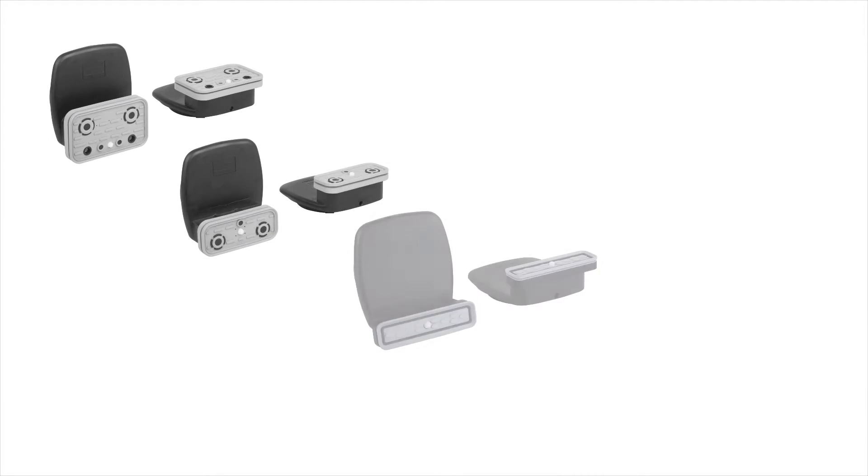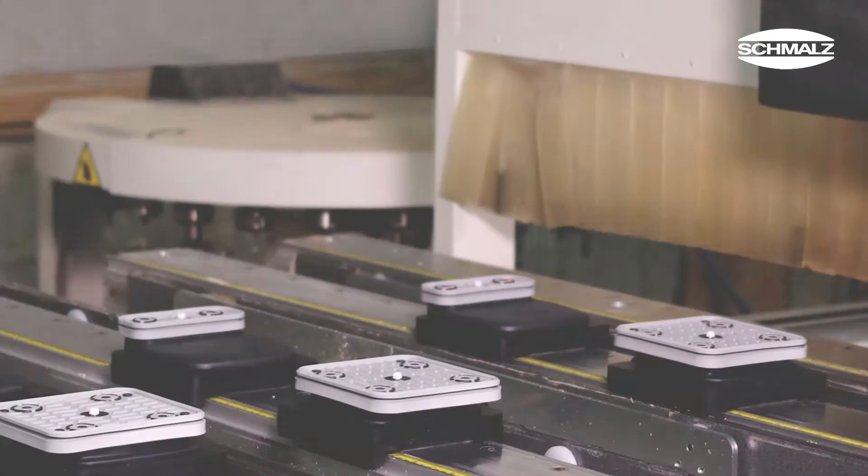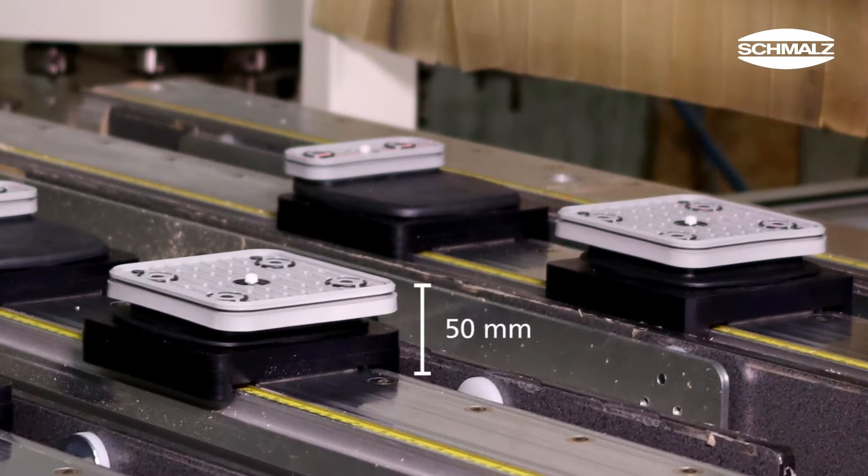The VCBL B vacuum blocks come in four different sizes and the working height of 50 mm is maintained, so a mixed operation with the existing SCM blocks is possible.